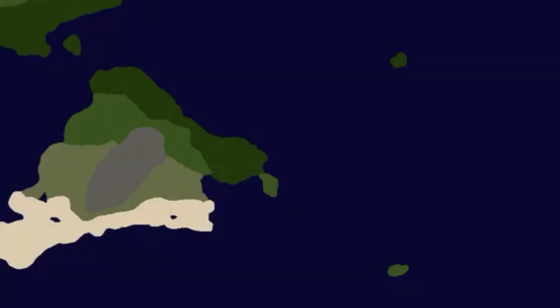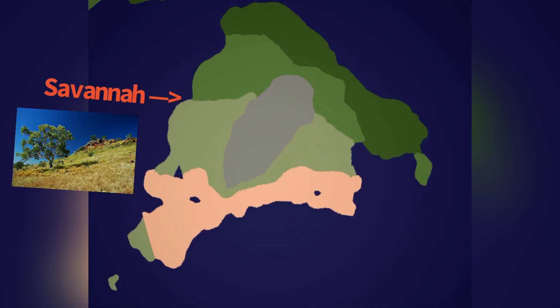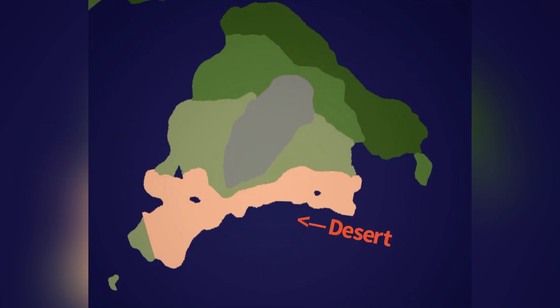The other island continent of Swafinia is Shume, an island continent only slightly smaller than Australia. Compared to Ent, it has a drier climate, having a rainforest near its northeastern part, a large savannah near its center, and a large desert in the rest of the continent.